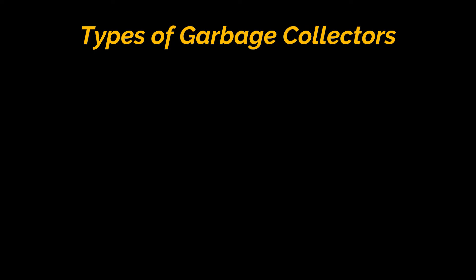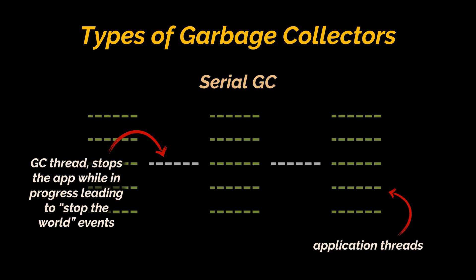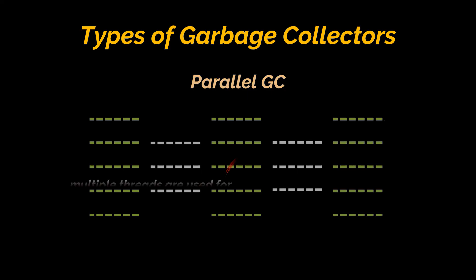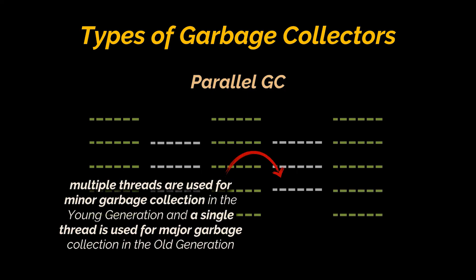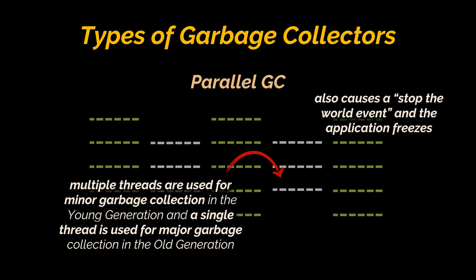Now let's look at different types of garbage collectors available in the JVM. First, the Serial GC — the simplest implementation, designed for small applications running on single-threaded environments. All garbage collection events are conducted serially in one thread, and when it runs it leads to a stop-the-world event where the entire application is paused. The Parallel GC is intended for applications with medium to large-sized data sets on multi-threaded hardware. Multiple threads are used for minor GC in the young generation and a single thread for major GC in the old generation. It also causes stop-the-world events, but is suitable when long pauses are acceptable.